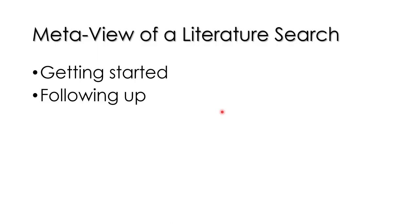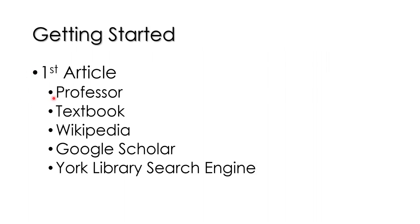Those are some of the nuts-and-bolts things about a literature search. Let's back off and talk about the whole process. I like to think about it as occurring in two parts: getting started, and following up. Getting started in a literature search is always very difficult — specifically, finding that first article. Once you get that first article, it's easy to find more useful articles, but getting that first one is very difficult.